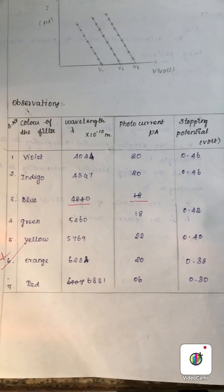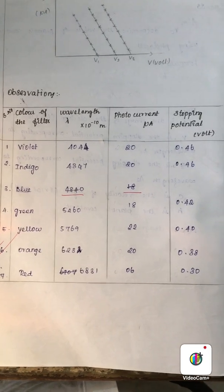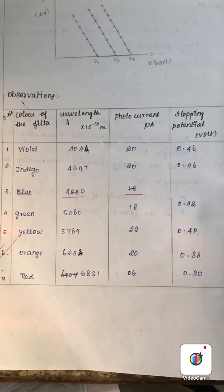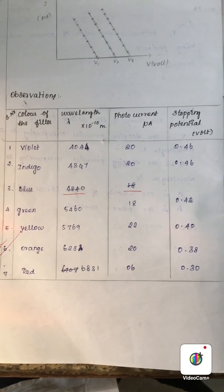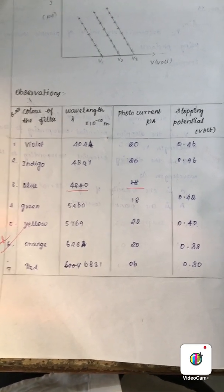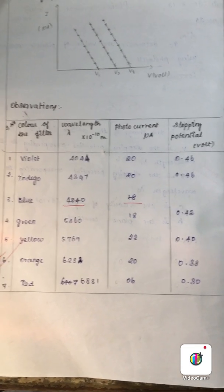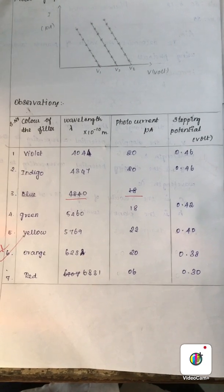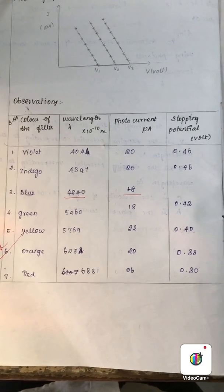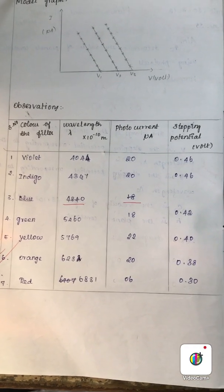Now we have placed a green filter. Likewise, you can use different colored filters and find the stopping potential for each. The wavelength corresponding to each color of the filter light is known, and you can use these values for drawing the graph between the current I and the voltage V.